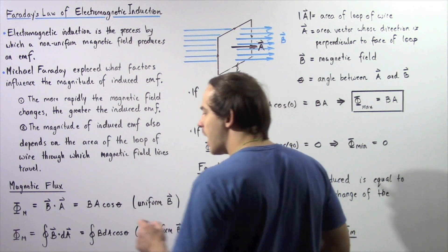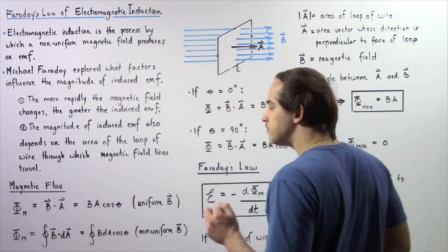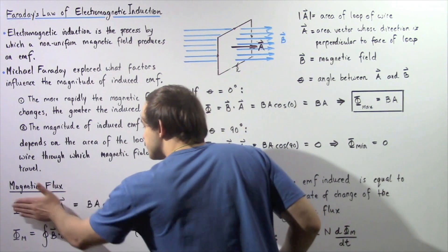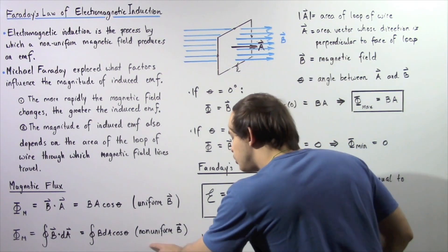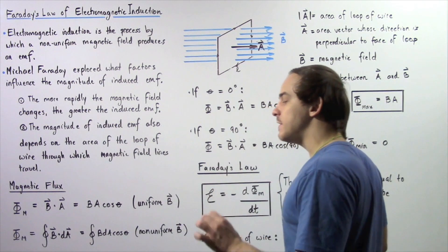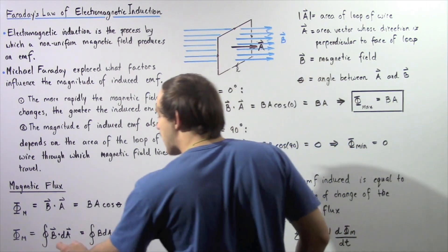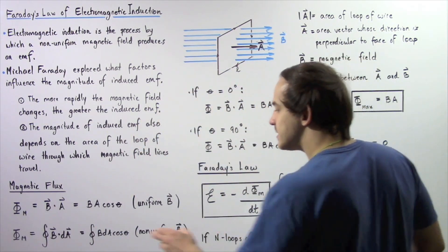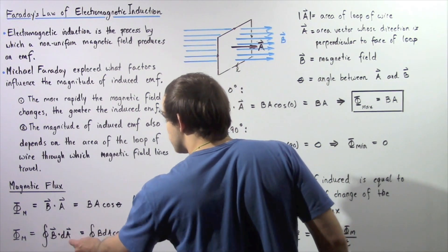By definition of the dot product, the dot product of these two vectors is equal to the product of their magnitudes multiplied by the cosine of the angle theta, which is the angle between the two vectors. This equation only works when the magnetic field is uniform. To calculate magnetic flux when the field is non-uniform, we take the closed integral of the dot product of the changing magnetic field and the infinitely small area dA, which equals the closed integral of B dA multiplied by cosine of theta.